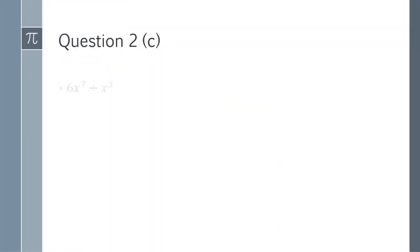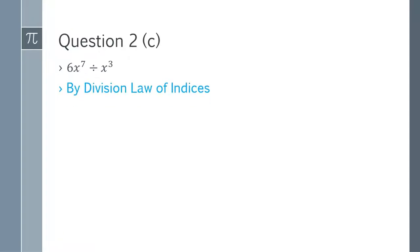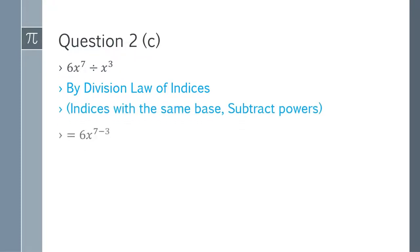Question 2c: 6x^7 divided by x^3. By the division law of indices, we take the common base and subtract the powers. 6 remains as coefficient, and x^(7-3) = x^4. The answer is 6x^4.